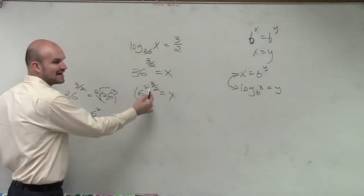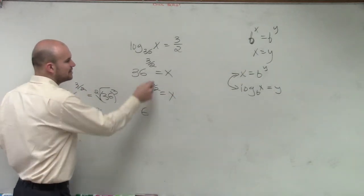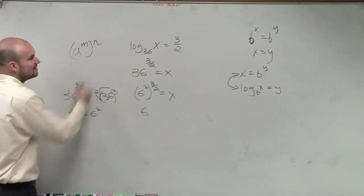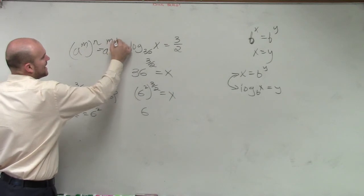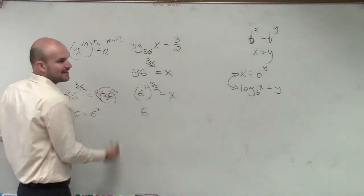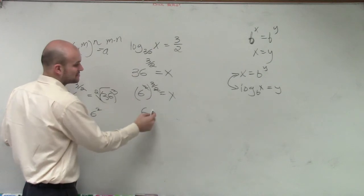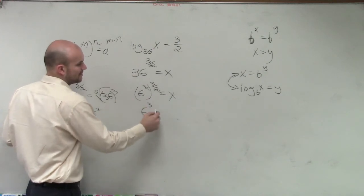Now, by rewriting it in that format, I know I have to do the power of power rule, where it says a to the m to the n equals a to the m times n. So therefore, I'm going to multiply these. So what's 2 times 3 halves? 6 halves, which is just going to be 3 equals x.